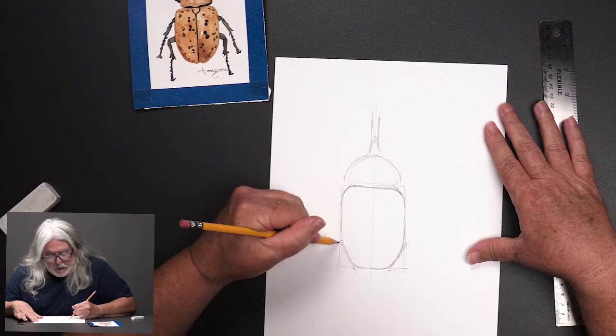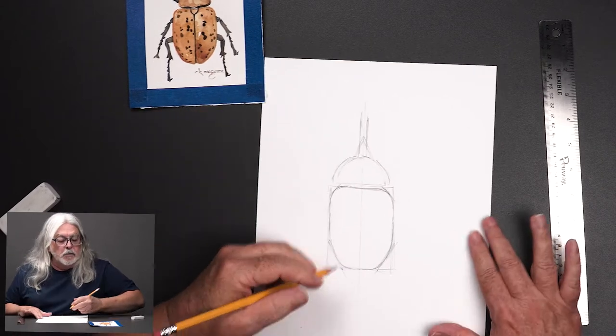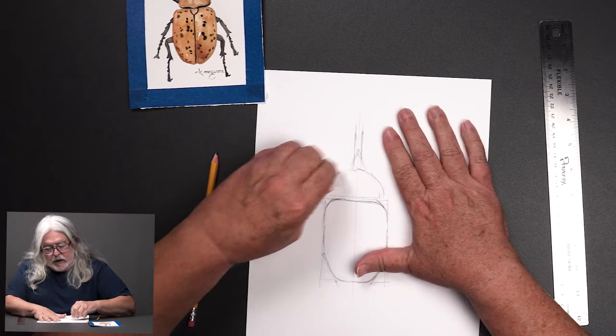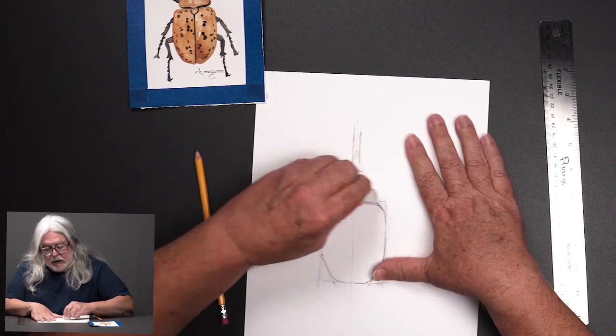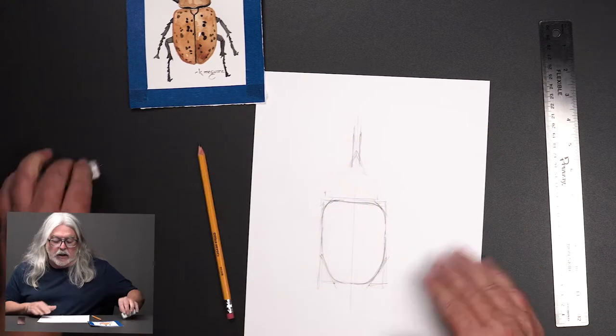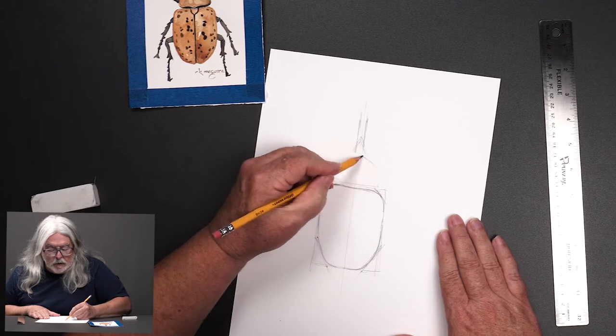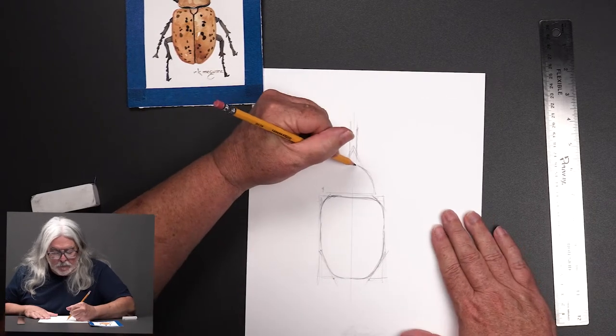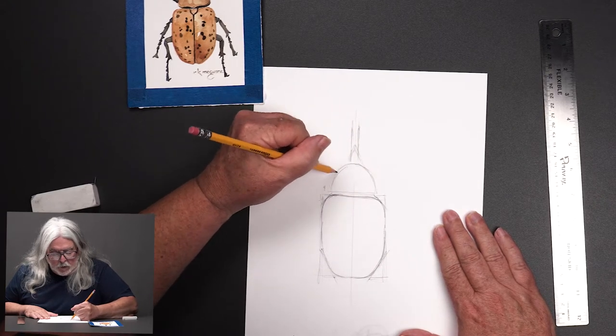Now we have the abdomen pretty much complete. I'm checking on this guy, looks like I got it a little too big so I'm going to try again. And I think it was more like an oval rather than a circle.